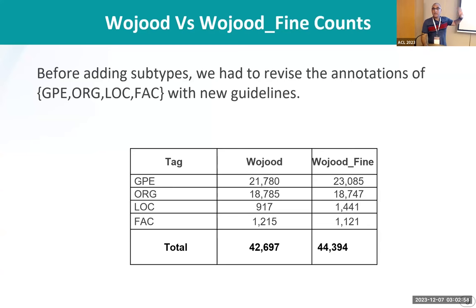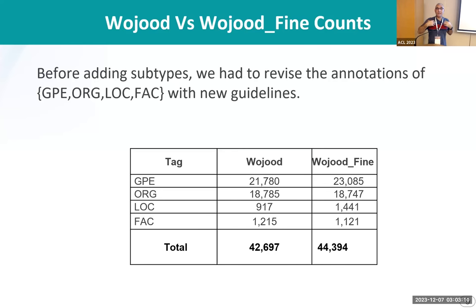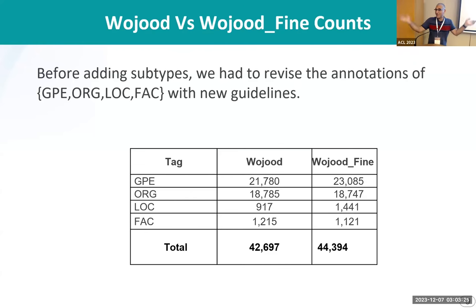Before annotating with subtypes, we had to revise the Wujud guidelines to make them compatible. I can see a research problem here — a nice research problem in the named entity recognition area — which is the compatibility of guidelines. This is a data engineering problem, not a natural language processing problem, but it should really be solved because all guidelines are not compatible.